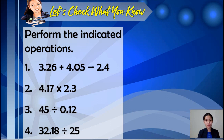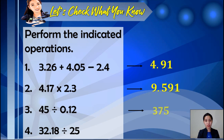You may pause the video so you can answer these items. Let's check our work. Item number 1, it's 4.91. Item number 2, it is 9.591. Item number 3, it's 375. And item number 4, it's 1.2872.